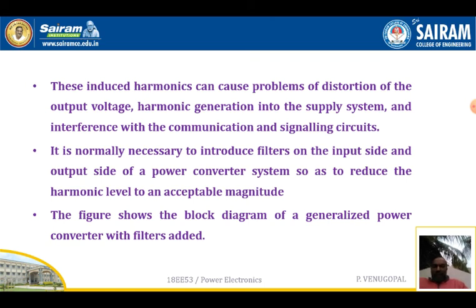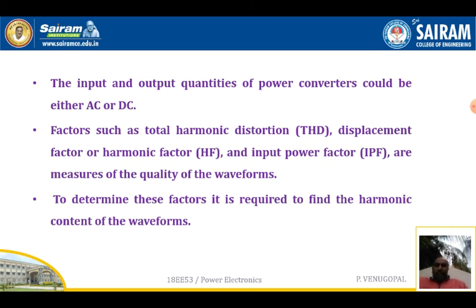The filters located at the input and output side of the power electronic system serve to reduce voltage and current harmonic levels to an acceptable magnitude. The block diagram of the generalized power converter includes filters added on both sides. The input and output quantities of power converters could be either AC or DC. Factors such as total harmonic distortion (THD), displacement factor, harmonic factor (HF), and input power factor (IPF) are measures of the quality of the waveforms.